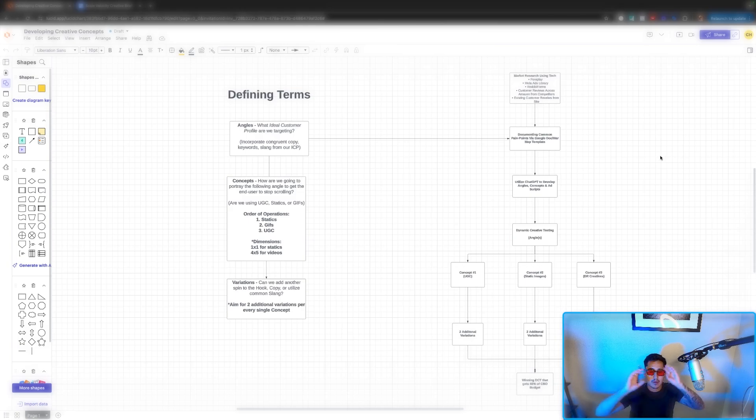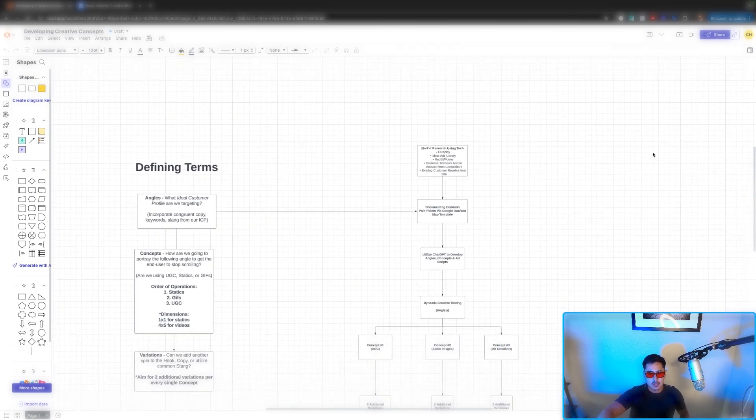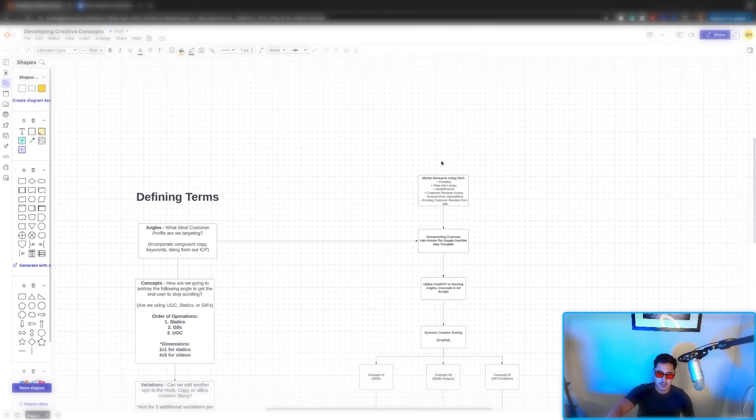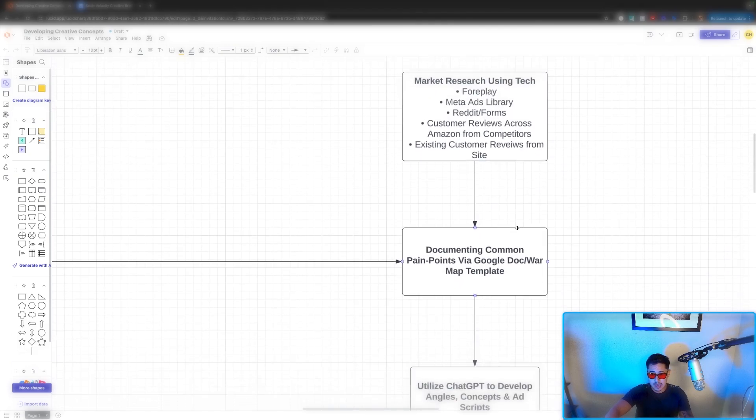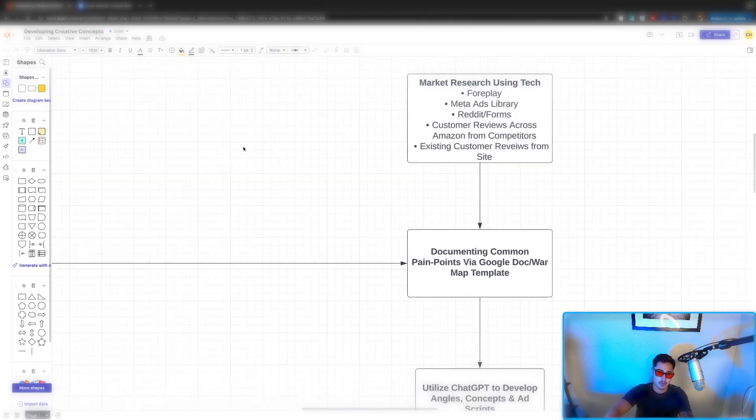It's mainly like if I were to break it down into teams, you have your creative strategist at the top of the fold, you have the editor underneath them, you might have a creative coordinator underneath them. But the main thing is the creative strategist is doing market research using tech like foreplay, like meta ads library, Reddit forms, customer reviews across Amazon from competitors, existing customer reviews from sites.